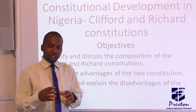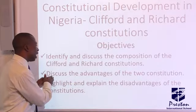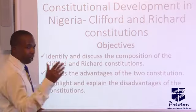Before we go into the lesson, let's look at the objectives to be achieved. Number one, we have to identify and discuss the composition of the Clifford and Richard Constitutions. Number two, we have to discuss the advantages of the two constitutions, and we are to explain the disadvantages of the constitutions.